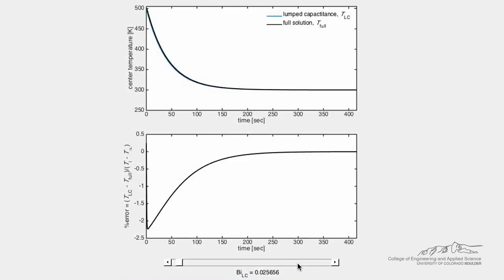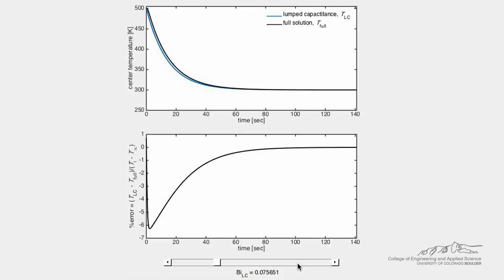We can adjust the BO number using the slider bar and observe the difference between the two solution approaches. Note that the lumped capacitance approach is valid if the BO number is approximately less than 0.1.